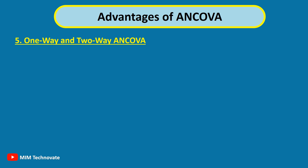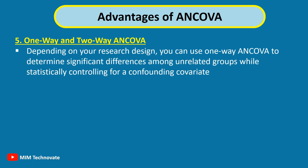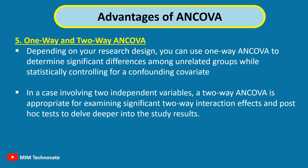1-Way and 2-Way ANCOVA: Depending on your research design, you can use 1-Way ANCOVA to determine significant differences among unrelated groups while statistically controlling for a confounding covariate. In a case involving two independent variables, a 2-Way ANCOVA is appropriate for examining significant two-way interaction effects and post-hoc tests to delve deeper into the study results.